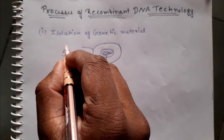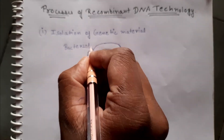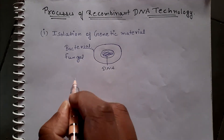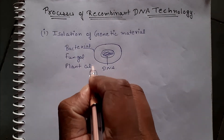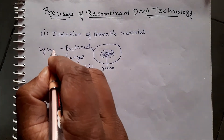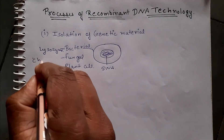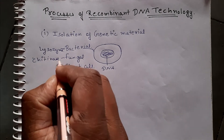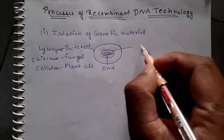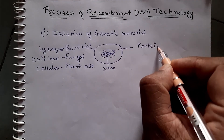For isolation, we treat the bacterial cells with lysozyme enzyme, the fungal cells with chitinase enzyme, and the plant cells with cellulase enzyme. These enzymes dissolve the cell wall of the cells so that the cells open up. For the proteins, lipids, sugars, or histone proteins which are found in the cytoplasm and in the nucleus,